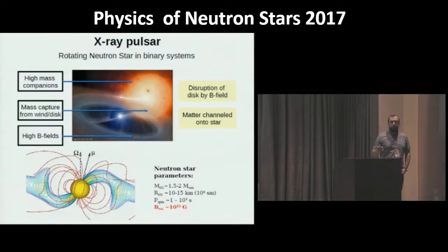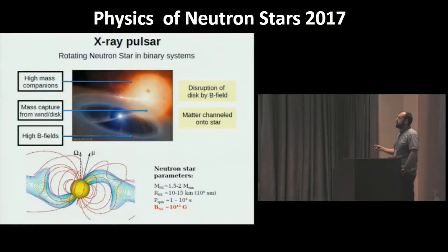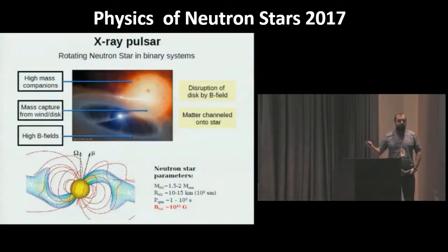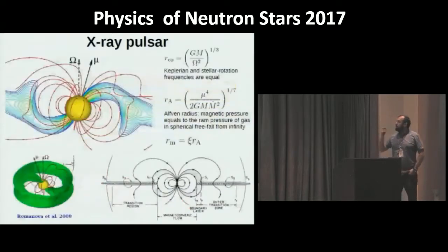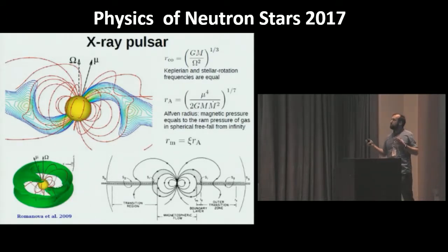These objects are neutron stars with very strong magnetic fields, about 10^12 to 10^13 Gauss. They are parts of binary systems; they accrete matter from an optical companion, usually via the accretion disk. Due to this strong magnetic field, the accretion disk is disrupted at the magnetospheric radius — where magnetic pressure equals the ram pressure of infalling matter.